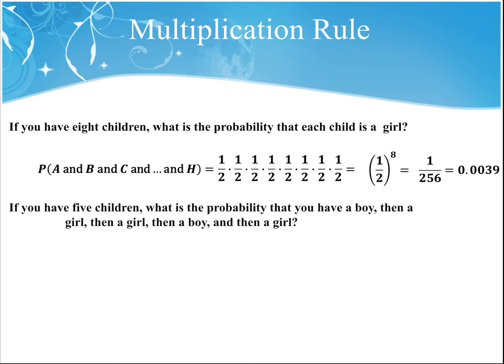If you have five children, what's the probability that you have a boy, then a girl, then a girl, then a boy, then a girl? All of these events are unrelated to the previous ones, so every time you have another child, the chance of having a boy or a girl is one in two. The probability of boy, girl, girl, boy, girl is 1/2 times 1/2 times 1/2 times 1/2 times 1/2 — one over two to the fifth power.